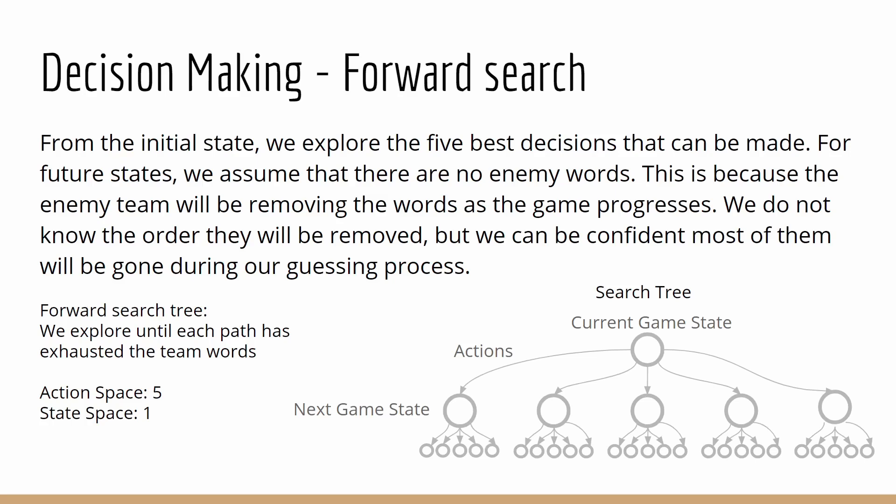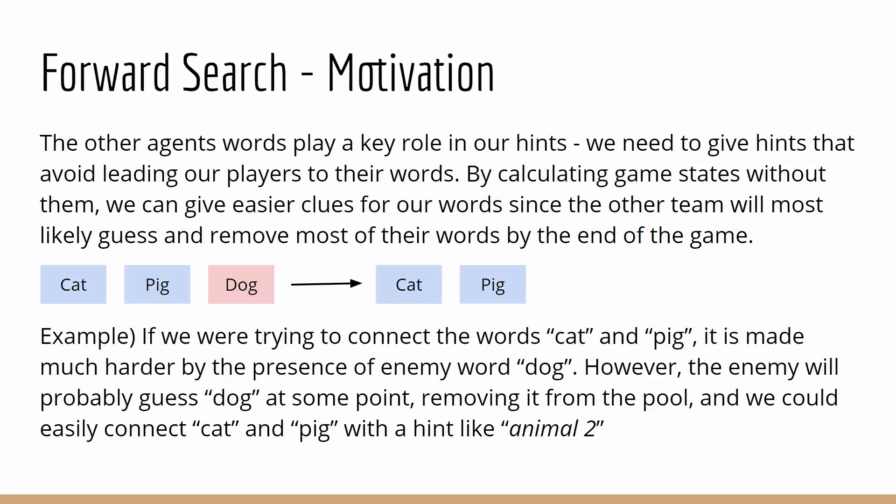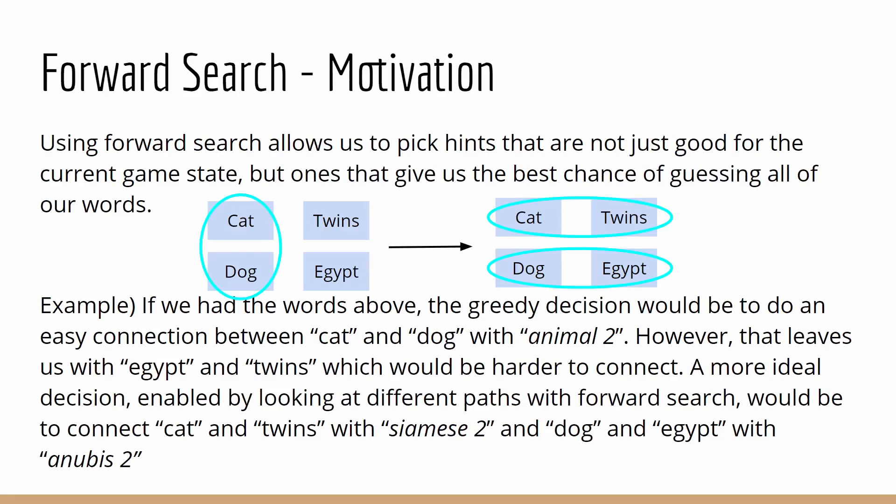Shown here is a diagram of the tree of how we go through all those paths until we have exhausted all of our team's words. The motivation behind this is that other agents' words play a key role in our hints — we need to give hints that avoid leading our players to their words. By calculating game states without them, we can more easily give clues for our words, so the other team will most likely guess and remove most of their words by the end of the game. Using a forward search also allows us to pick hints that are not just good for the current game state, but ones that give us the best chance of guessing all our words.